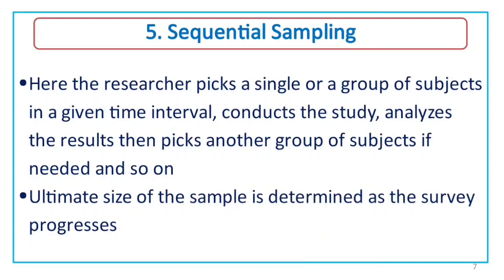This is sequential sampling, an important sampling technique. The researcher picks a single subject or a group of subjects at a given time interval, conducts the study, analyzes the results, then picks another group of subjects if needed, and so on. The ultimate size of the sample is determined as the survey progresses. Unlike probability sampling, we do not fix the sample size in advance.